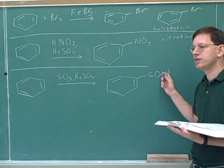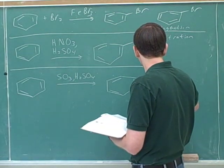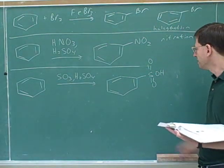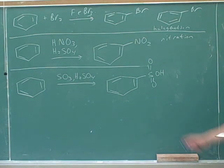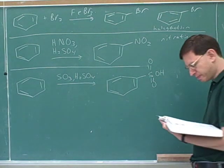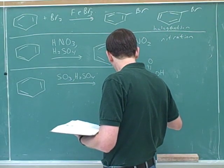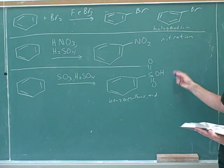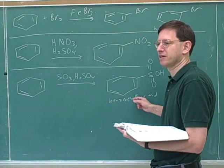Now since we put on this proton, this is now an acid. It would help to draw what this looks like. You can see that this looks like an acid because it's got a proton on the oxygen. This is what's called a sulfonic acid — not a sulfuric acid, but a sulfonic acid. To be precise, this is benzene sulfonic acid. And what's the name of this reaction? If halogenation and nitration, then this would be sulfonation — because we didn't make a sulfuric acid, we made a sulfonic acid.